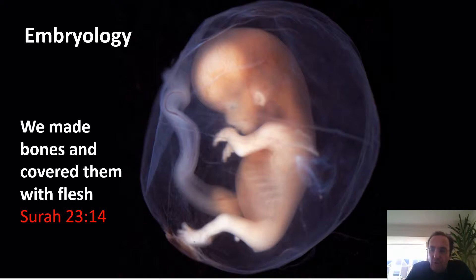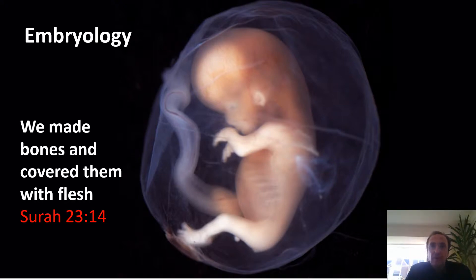"We created man from an extract of clay, then we made him as a drop in a place of settlement, firmly fixed, and then we made the drop into an alaqah, which is like a leech, and then we made the alaqah into a mudghah, like a chewed substance, and we made from the mudghah bones and we covered the bones with flesh, then we developed him into another creation. So blessed is Allah, the best of creators." There are many inaccuracies in this passage describing embryo formation — starting off as an extract of clay, being a drop, then a blood clot, and flesh covering the bones, rather like sculpting with clay.